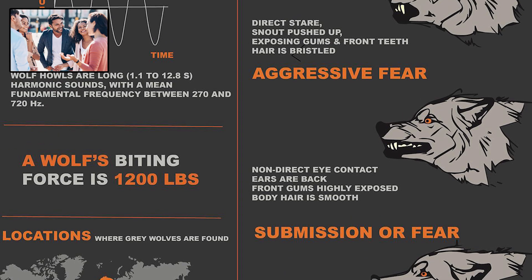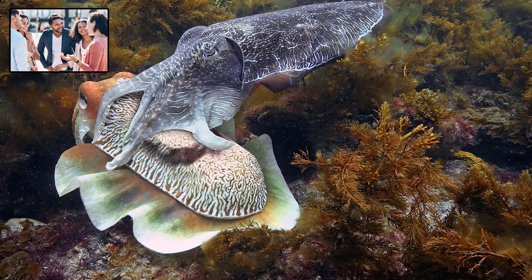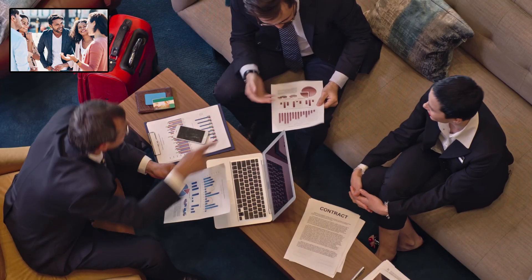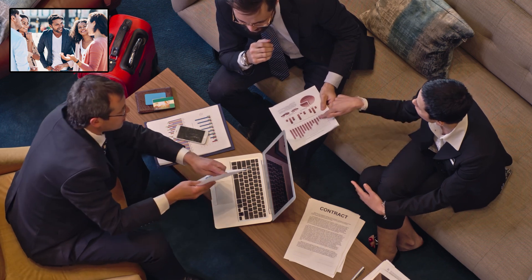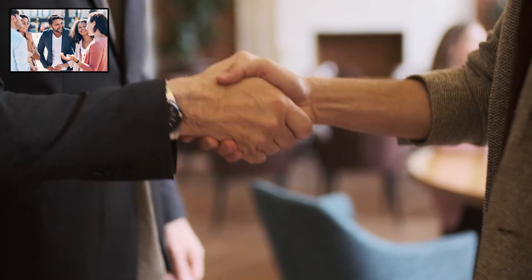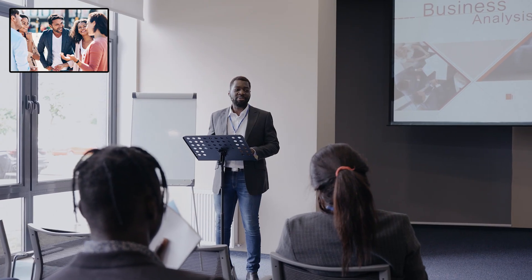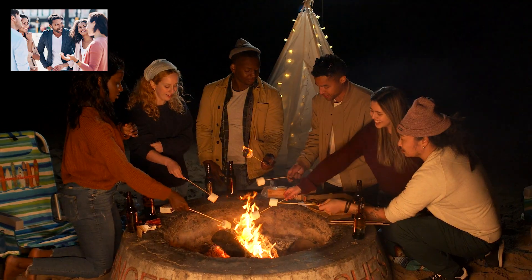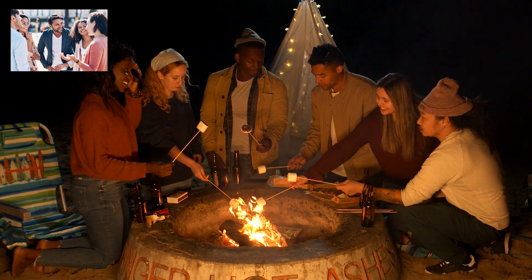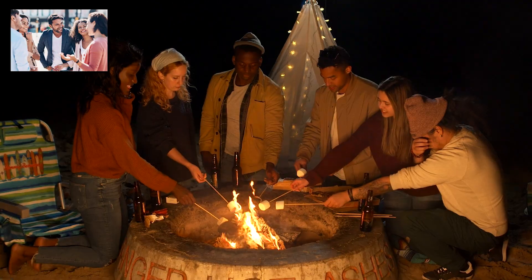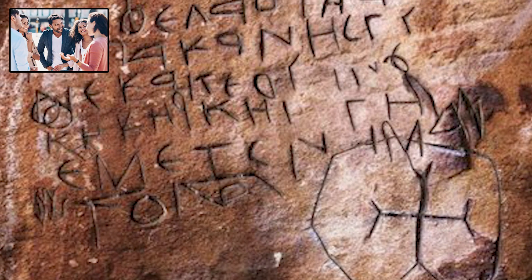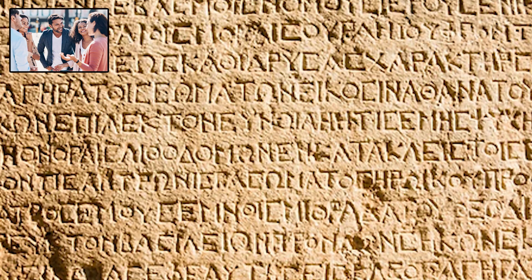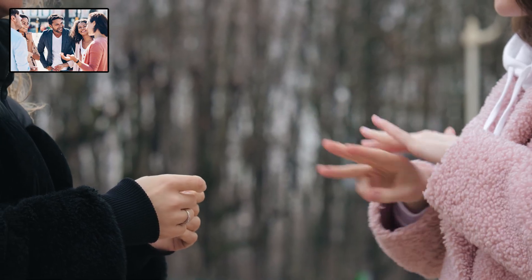Wolves use posture, tail position, and facial expressions to establish social order, while cuttlefish can change skin color in seconds to signal mood or mating readiness. But human communication took this basic ability to a whole new level. We use sounds to represent objects, actions, and ideas, combining these symbols according to grammatical rules to create meaning. We can talk about things not present, describe abstract concepts, or share imagined scenarios — no other species does this with our level of complexity. Language helped early humans coordinate hunts, teach tool use, and share warnings about dangers, and cultural knowledge could be passed down instead of being relearned every generation.